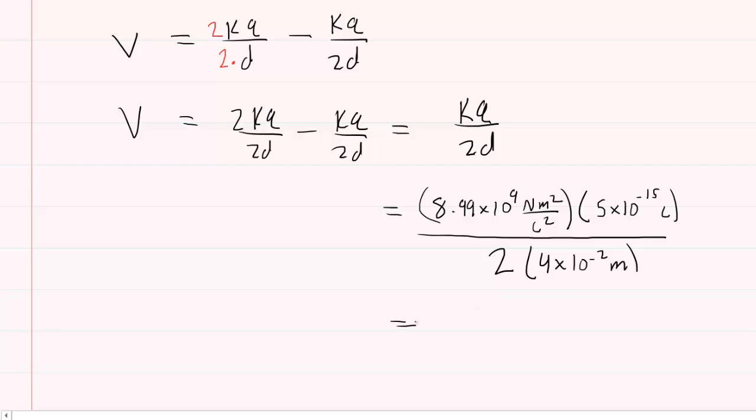So now we'll pick up our calculators and we will process this calculation. And when you do so, you will get a total electric potential value of approximately 5.62 times 10 to the minus 4. And electric potential has a standard unit of volts. So this would be the correct answer to the question.